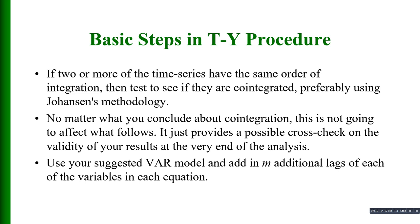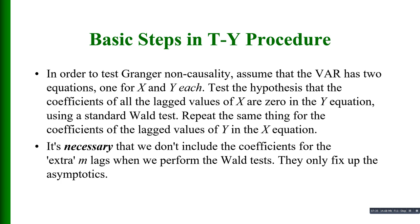We will then use our specified VAR model and add m additional lags of each of the variables in each equation for Y and X. To test Granger non-causality, the VAR has two equations — one for X and one for Y — and we test the hypothesis that the coefficients of all the lag values of X are zero in the Y equation using the standard Wald test, and repeat the same for the coefficients of the lag values of Y in the X equation. It is important that we do not include the coefficients for the extra m lags when performing the Wald test, as they are there only to fix up the asymptotics.